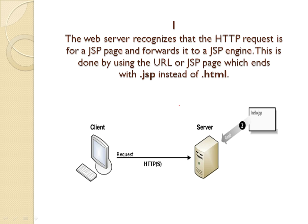In the second step, the server is reading whatever page you are sending — it could be a JSP page, a normal HTML page, or any other type. The web server recognizes what kind of HTTP request it is and which kind of page it is for. If it is for JSP, it forwards it to the JSP engine. The JSP engine is responsible for processing the JSP page. The server reads and recognizes the HTTP request, and if the page is a .JSP page, it sends it to the JSP engine for further processing.